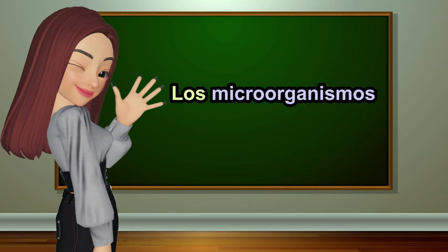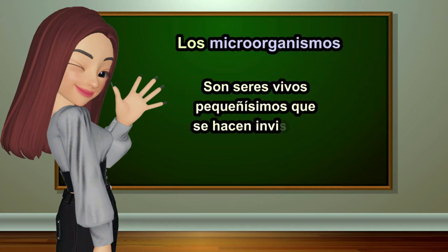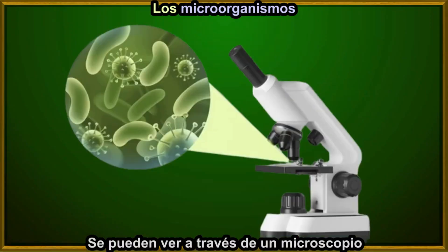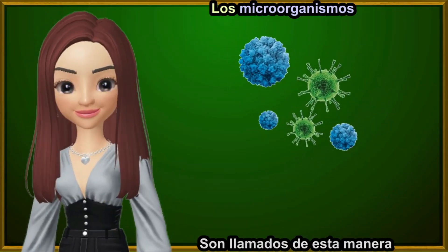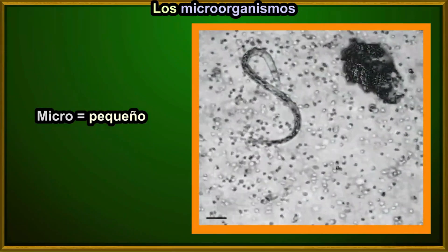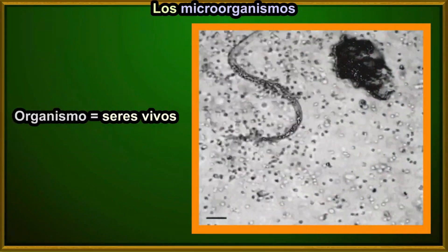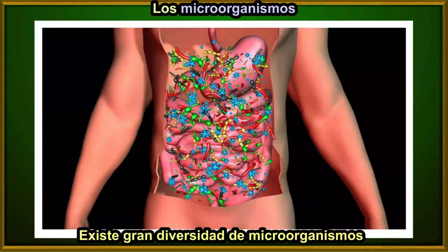Microorganisms are living beings that are so incredibly small that they cannot be seen with the naked eye. We can only observe them with the aid of a microscope. They are called microorganisms because the prefix micro means small and organism refers to living beings.